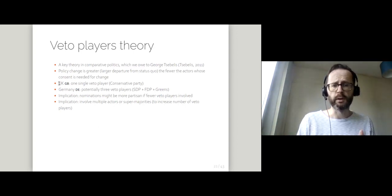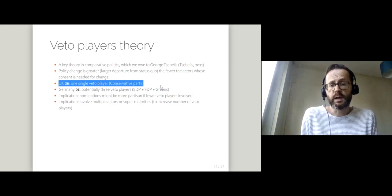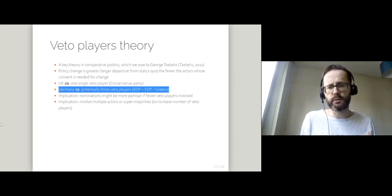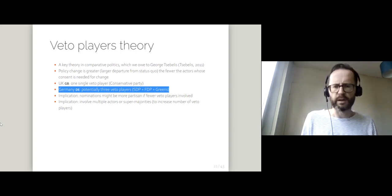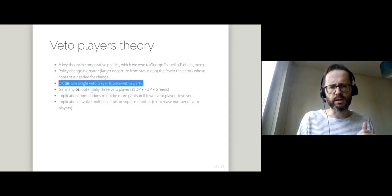Equivalently, policy change is greater if there are fewer veto players. If we think about the UK at the moment, then generally we think of there being a single veto player — the Conservative Party. Consent of the Conservative Party, by virtue of its majority in Parliament, is necessary for change, and no one else needs to consent in practice. By contrast, in Germany you've got potentially three veto players — the Social Democrats, the FDP, and the Greens — all of whom must come to agreement as governing parties. The implication is that in the UK you would expect more radical policy change than in Germany.